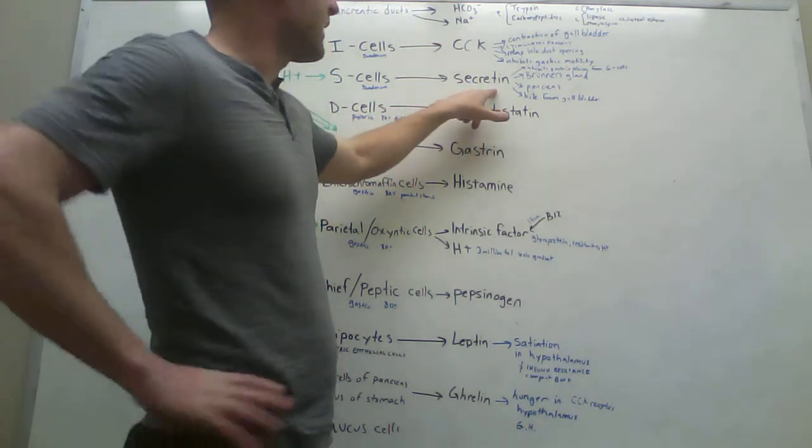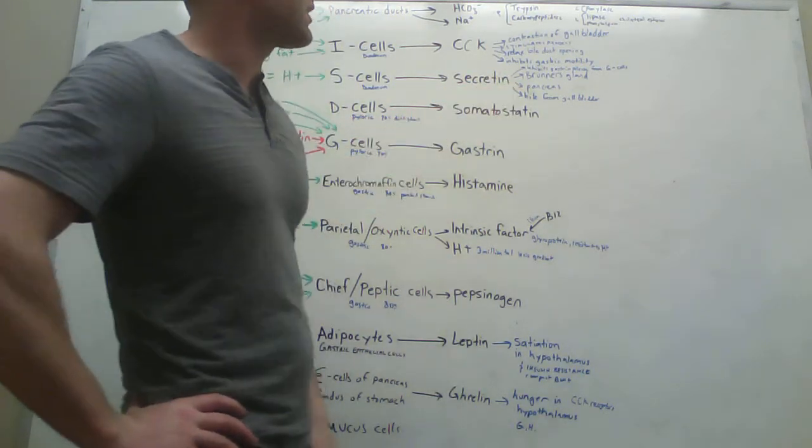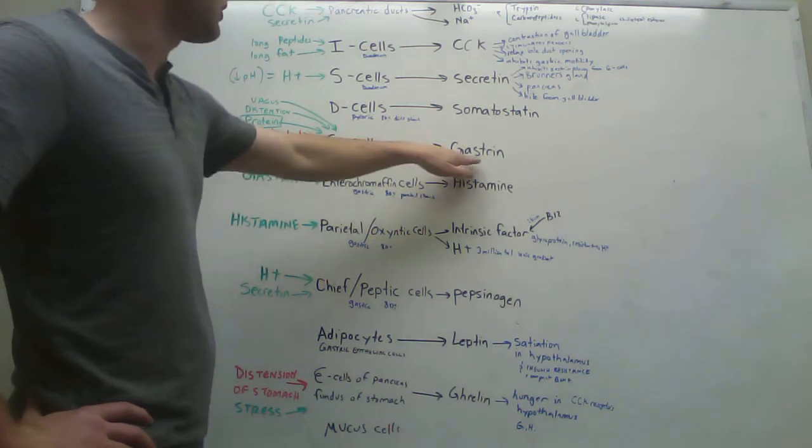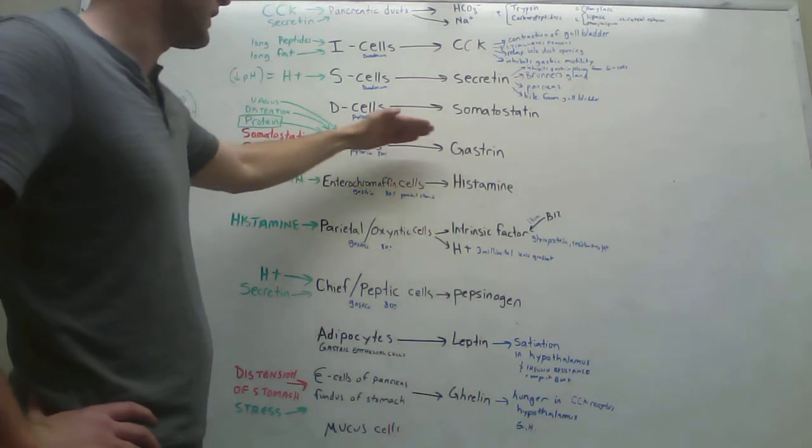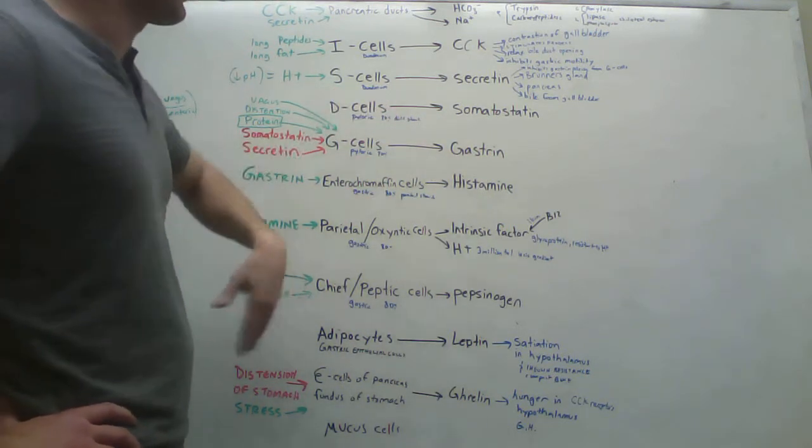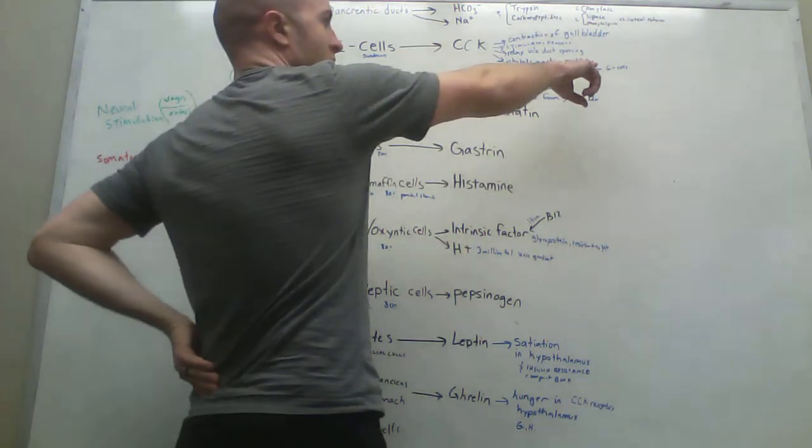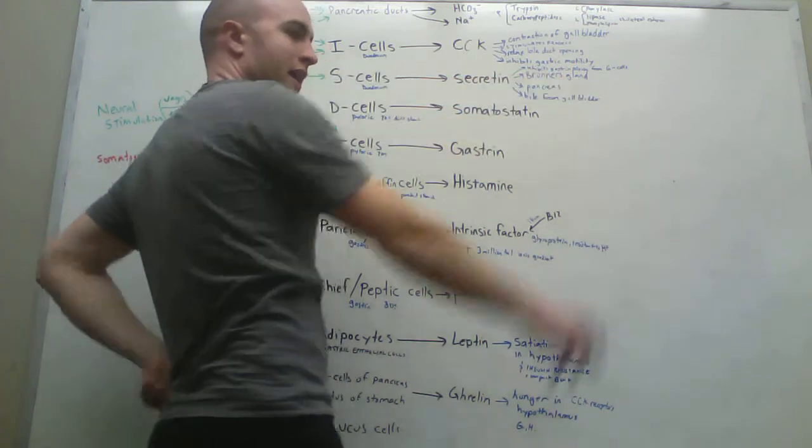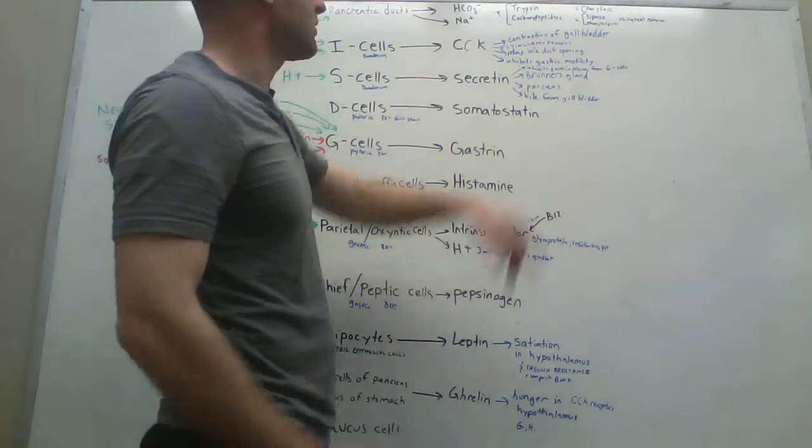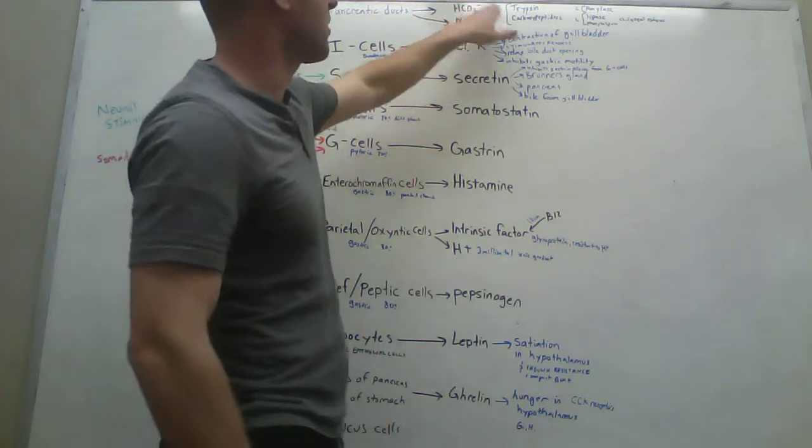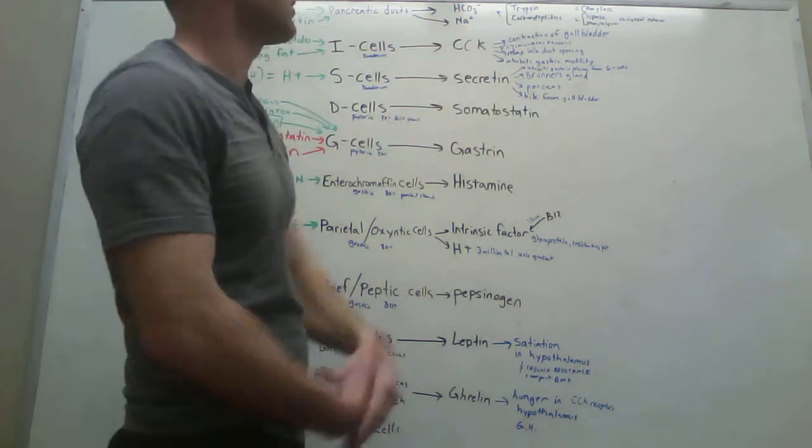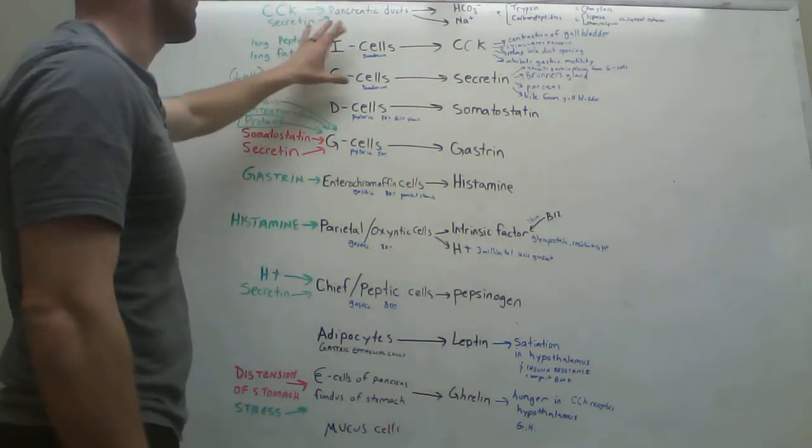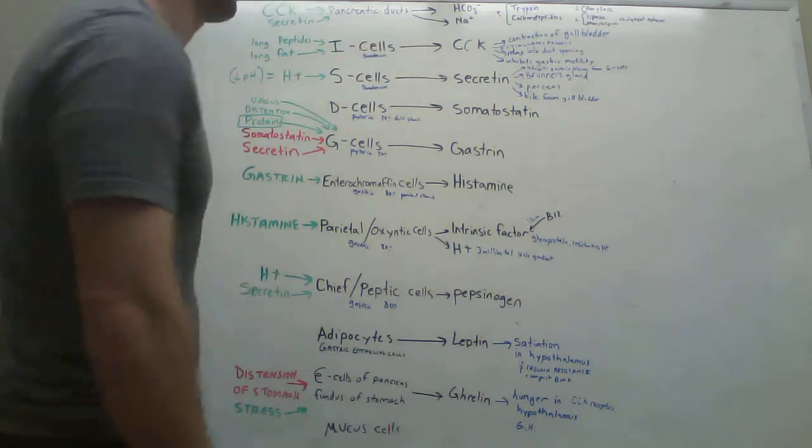So these S cells, they release secretin. Secretin does a number of things. It inhibits the gastrin release from the G cells. So down here, we're going to look at where we're going to talk about these G cells. G cells release gastrin, which ultimately, gastrin, I'll go into that in a minute. So it inhibits the release of gastrin from the G cells. The Brunner's, it also triggers the Brunner's glands to release a whole bunch of mucus. It also tells the pancreas, as we talked about earlier, to release bicarbonate and these other things. And also tells the bile to be released from the gallbladder. So secretin does a lot of stuff. So I cells and S cells, and they do a lot of stuff in the pancreas and all that.